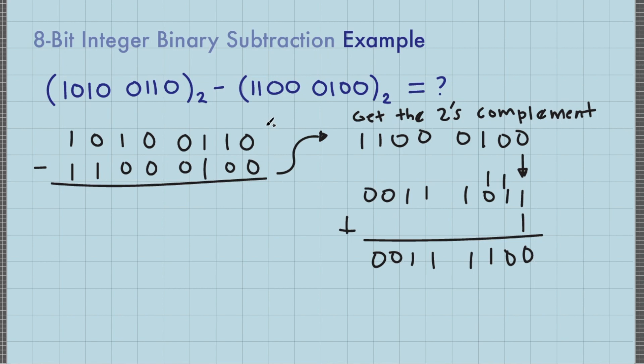From the operation of binary subtraction, this has now become a binary addition. So let me rewrite these numbers here: 10100110 plus 00111100.